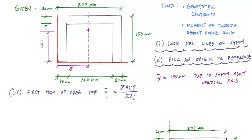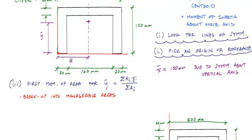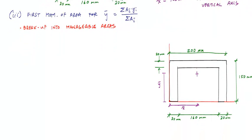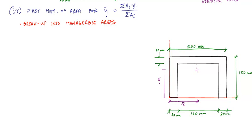In order to apply this equation, we need to break up this channel shape into manageable areas. I'm going to do that down here by creating a table. I have the same cross-section, and I'm going to break it up into three rectangles by drawing a line here and a line here. So I have area one, two, and three.